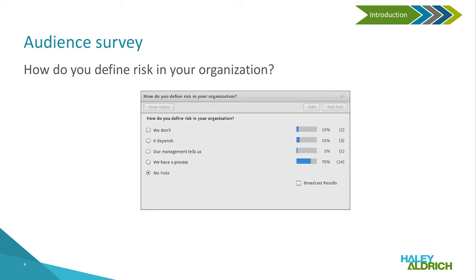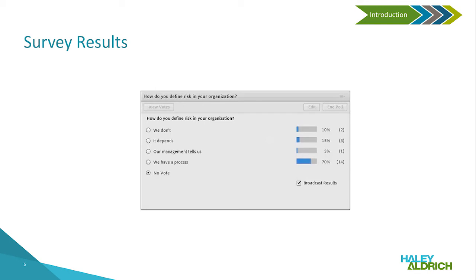Now switching to the results slide. You should now be seeing the results of our survey. What we're seeing is a majority of the people on this call have a process in place in some format. So risk is obviously a topic that is being discussed and is important to everyone on this call, which is one of the reasons we chose this as our topic to present today. That's great that everyone's thought about it, and we should have some good discussion towards the end.